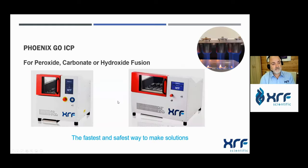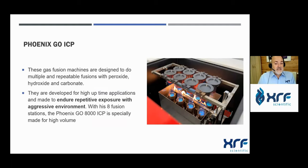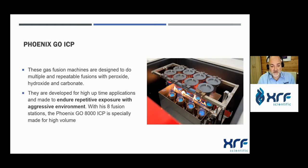At XRF Scientific, we have a specific model designed for peroxide, carbonate, and hydroxide fusions: the Phoenix Go, available in two sizes. The first model is equipped with two fusion positions and the second with eight fusion positions. The big advantage of using an automatic system is that we can perform multiple and repeatable fusions with different fluxes. These machines are built to endure exposure to aggressive and reactive environments like peroxide, and the throughput is far better compared to manual fusion because everything is done fully automatically.